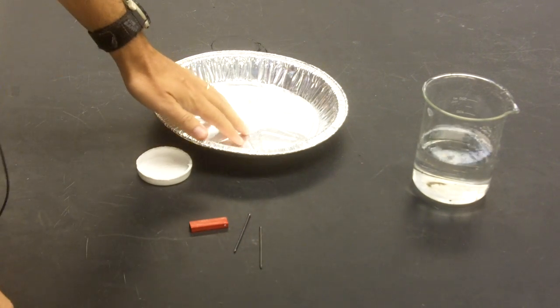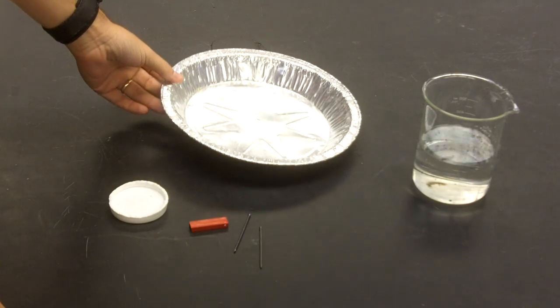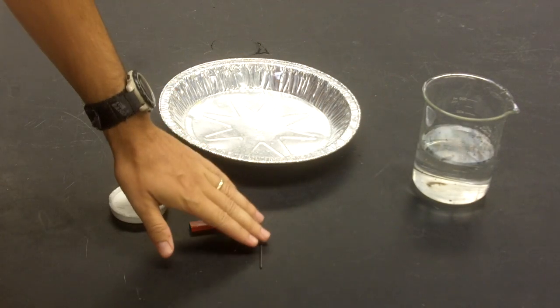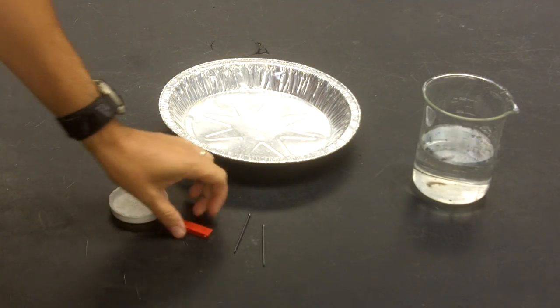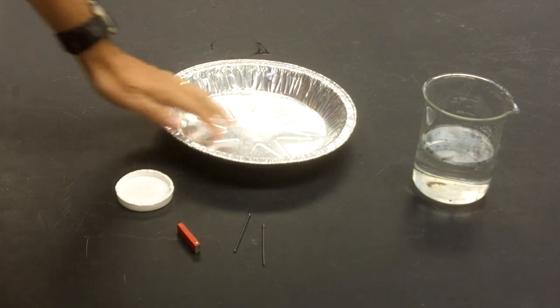For this first activity, I have a pie tin, some water, two nails, and a magnet with a north end and a floater. Let me show you what I'm going to do.